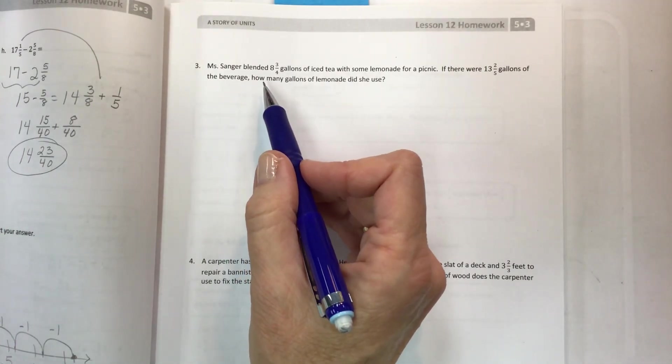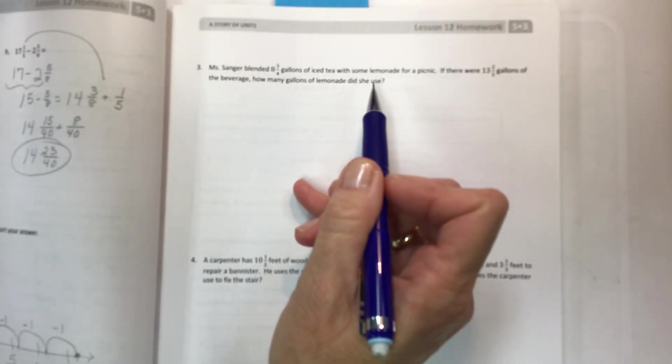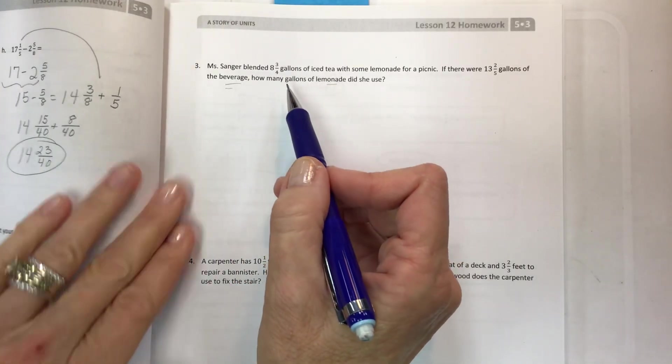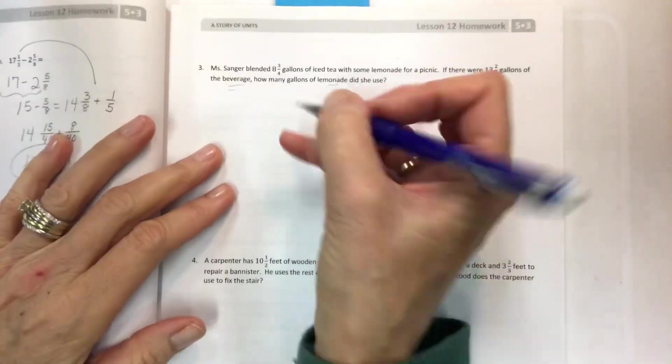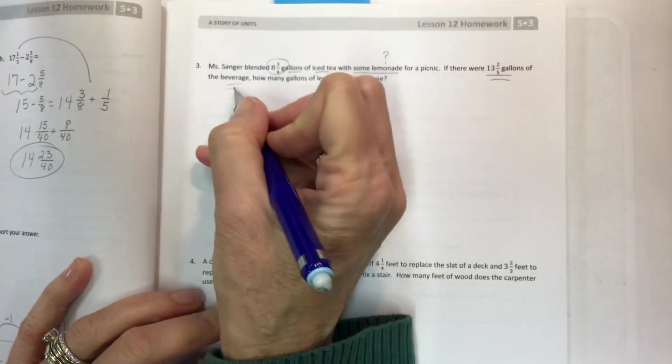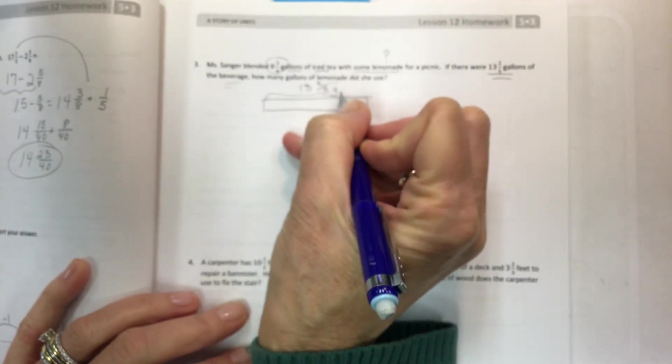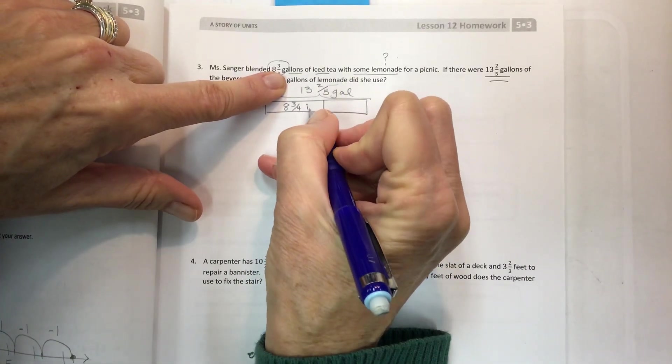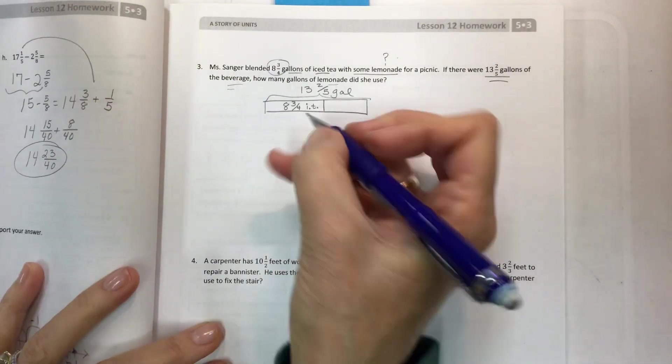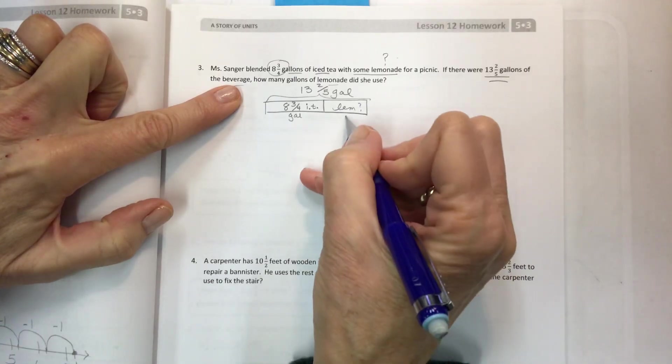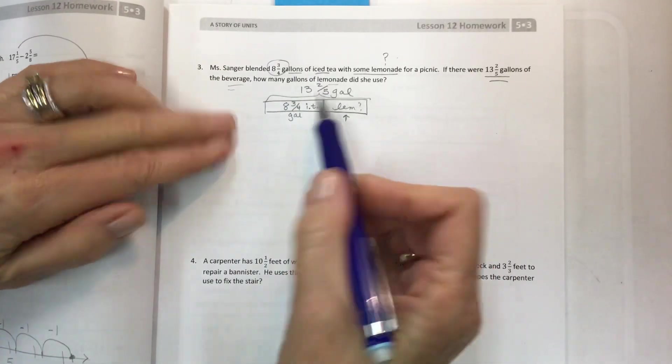Ms. Sanger blended eight and three-fourths gallons of iced tea with some lemonade for a picnic. If there were 13 and two-fifths gallons of beverage, how many gallons of lemonade did she use? So this is a great place for a tape diagram when they talk about parts and a whole. So we've got the gallons of iced tea, some lemonade, and beverage as the total. Try to get used to making these because they can really help you see the parts and the whole. Iced tea, eight and three-fourths gallons of it. And then some lemonade, which is a mystery. How many gallons of lemonade?